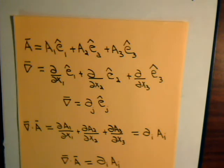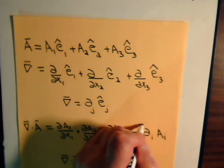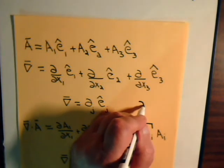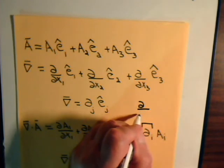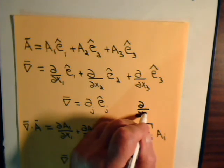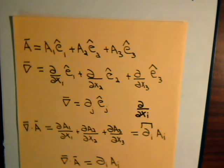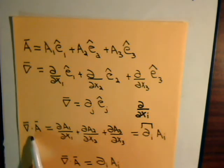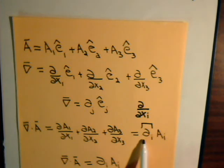Remember from our previous video, video number 14, that the partial i notation is an abbreviation for partial of something with respect to x i. Using this symbol, we can express the divergence of a product like this.